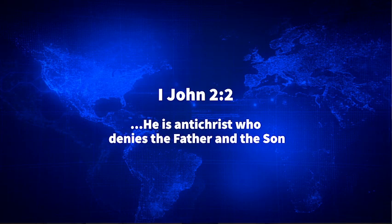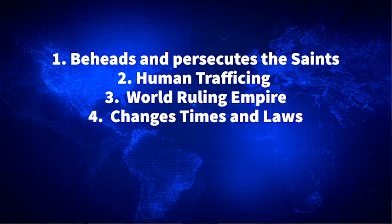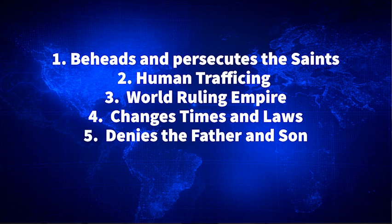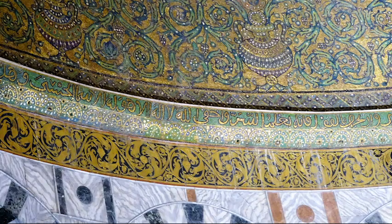A fifth sign: 1 John 2:22 says, 'He is Antichrist who denies the Father and the Son.' The Antichrist is another name for the beast, the king of the north, and the little horn. On the Dome of the Rock, it says 'Allah has no son and he is the only God.' Islam teaches that it is anathema to call God a father figure. Islam is the only religion on earth that specifically denies both the fatherhood of God and the sonship of Jesus Christ.